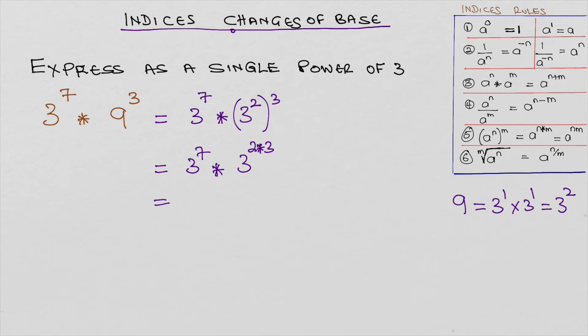So we can write 3 to the power of 7 times 3 to the power of 6. And that becomes 3 to the power of 7 plus 6. Again, that's rule number 3.